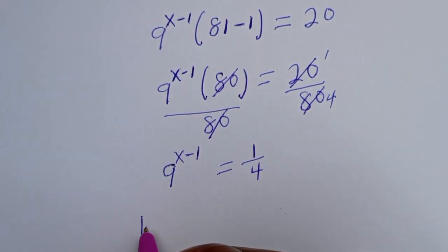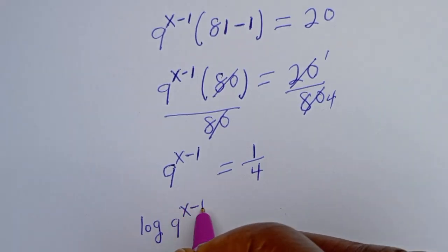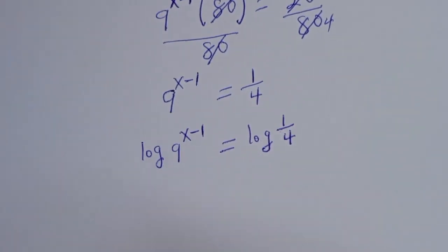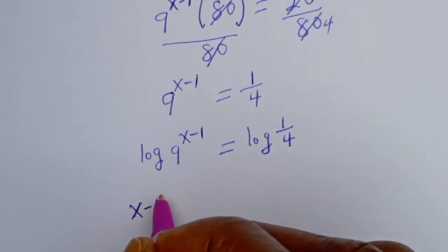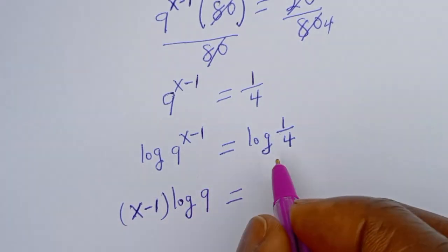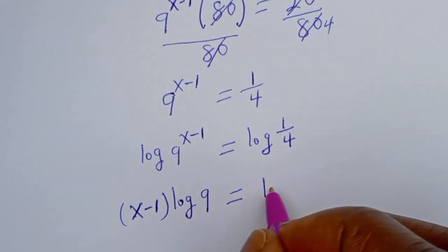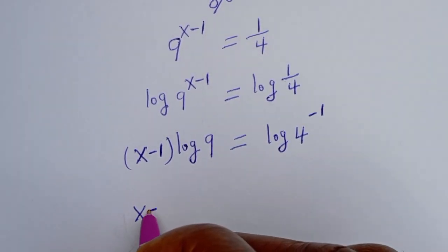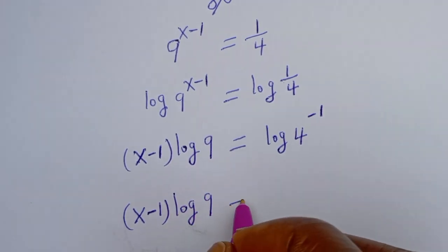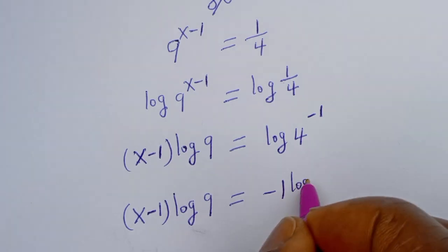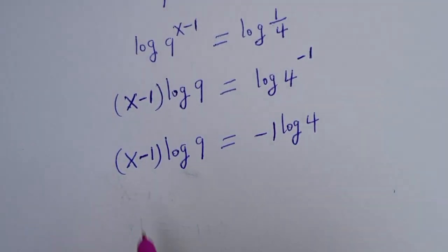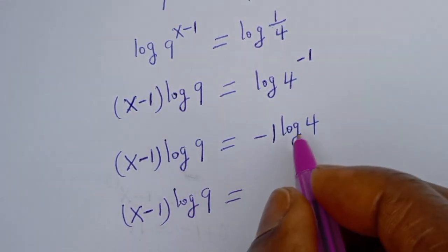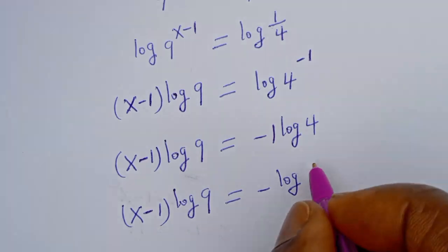Now let's take the log of both sides. We have log of 9 to the power of x minus 1 is equal to log of 1 over 4. And this is x minus 1 times log 9 is equal to log of 1 over 4, which can be written as log 4 to the power of minus 1, giving us minus 1 times log 4.